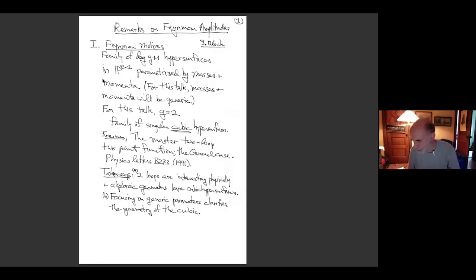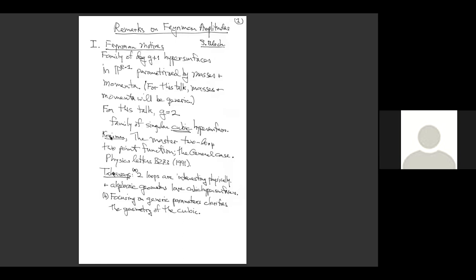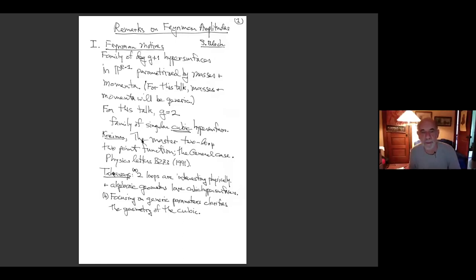What's involved here goes back to a paper of Dirk. Can you see my little arrow when I move it? So I'm pointing to a paper here of Kreimer, which is an old paper. Physicists never look at old papers, but mathematicians do. This one goes back to 1991, and basically it talks about the amplitude for two-loop graphs, and this paper had really a lot of influence in my thinking.